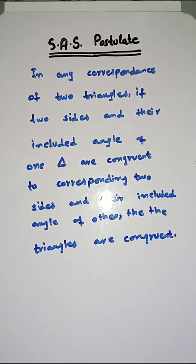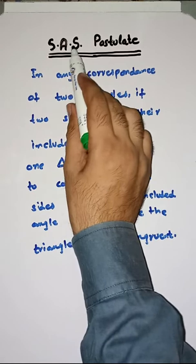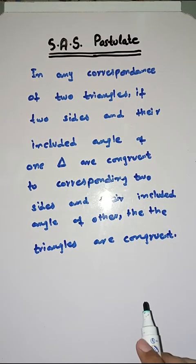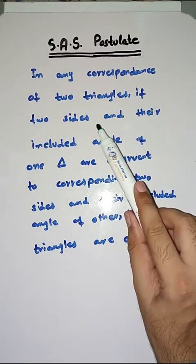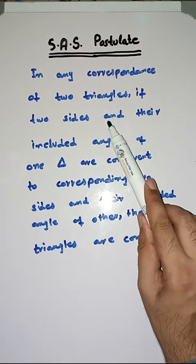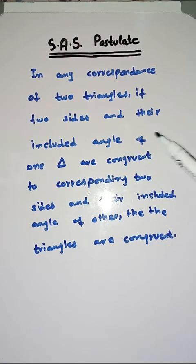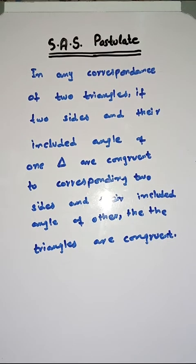So students, what is SAS postulate? SAS stands for side, angle, side — side angle side postulate. In any correspondence of two triangles, if two sides and their included angle of one triangle are congruent to the corresponding two sides and their included angle of the other, then the triangles are congruent.